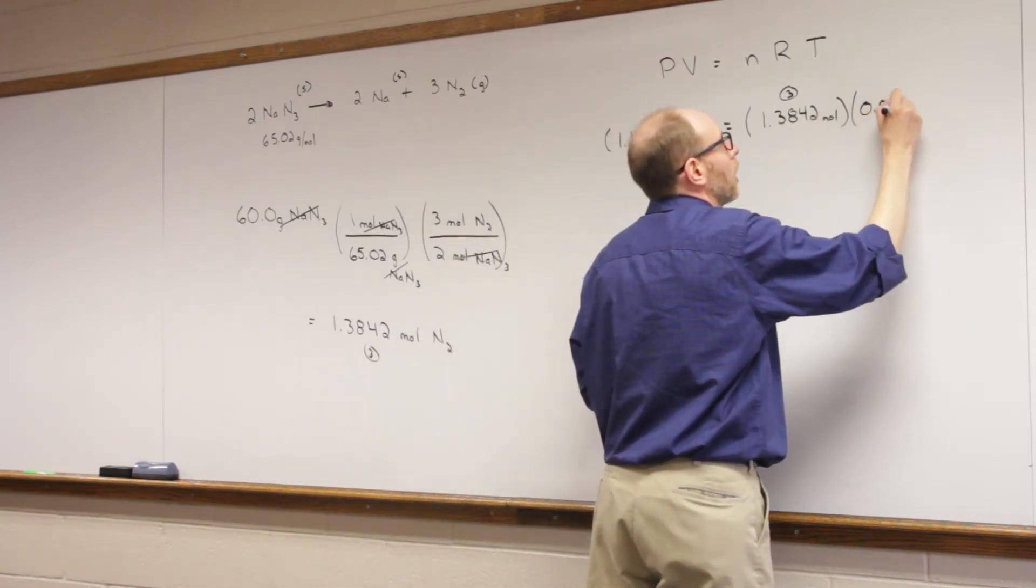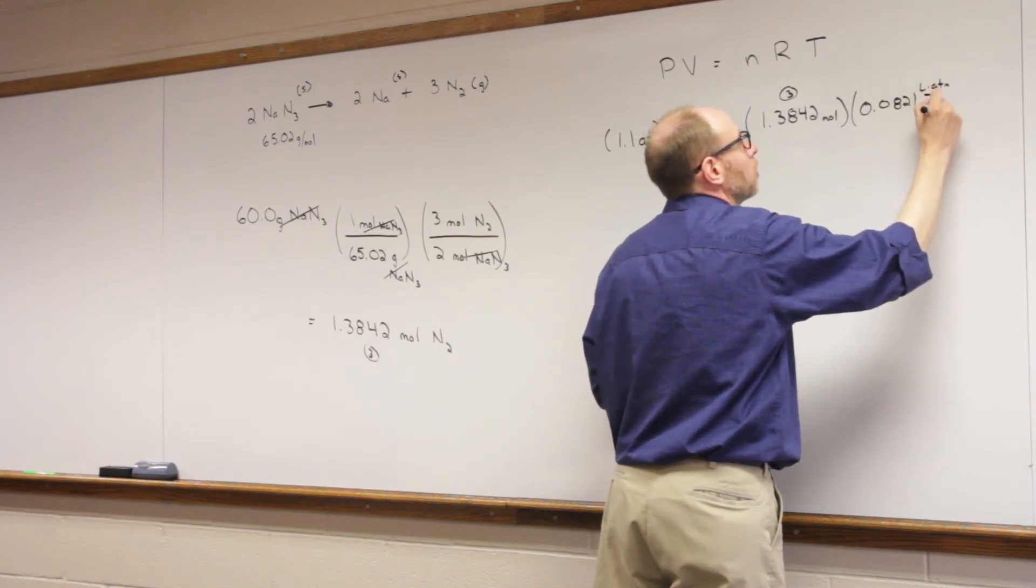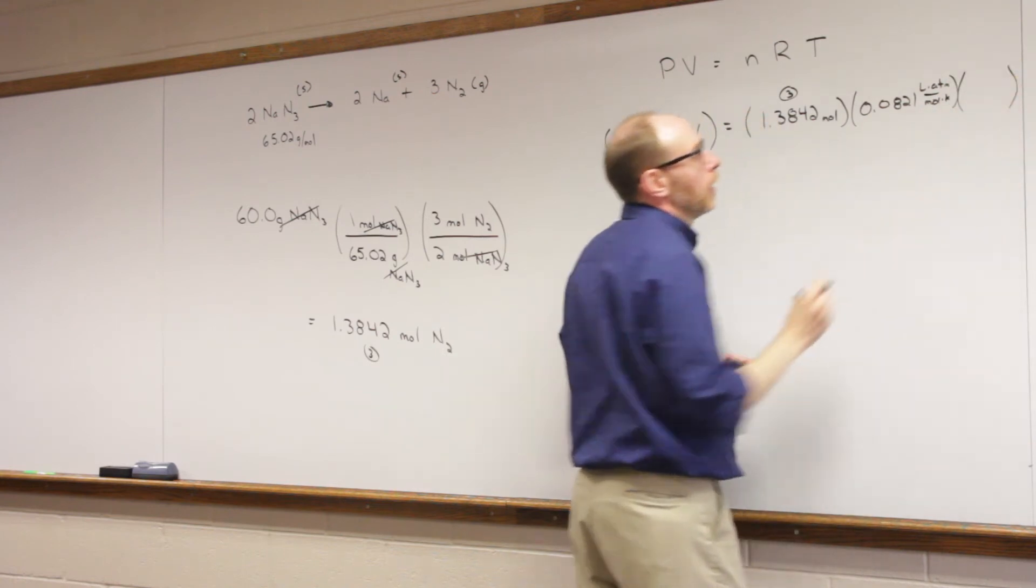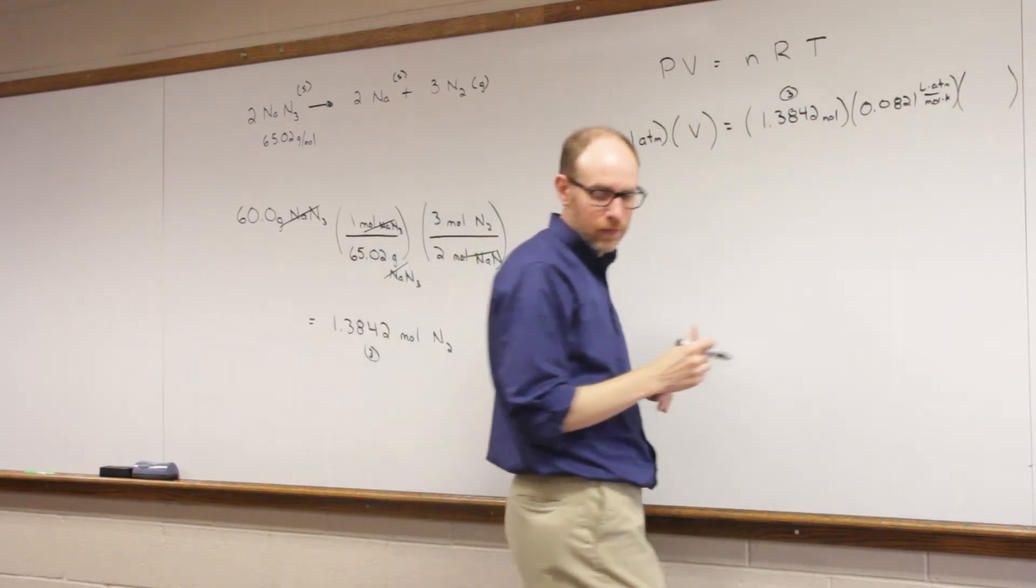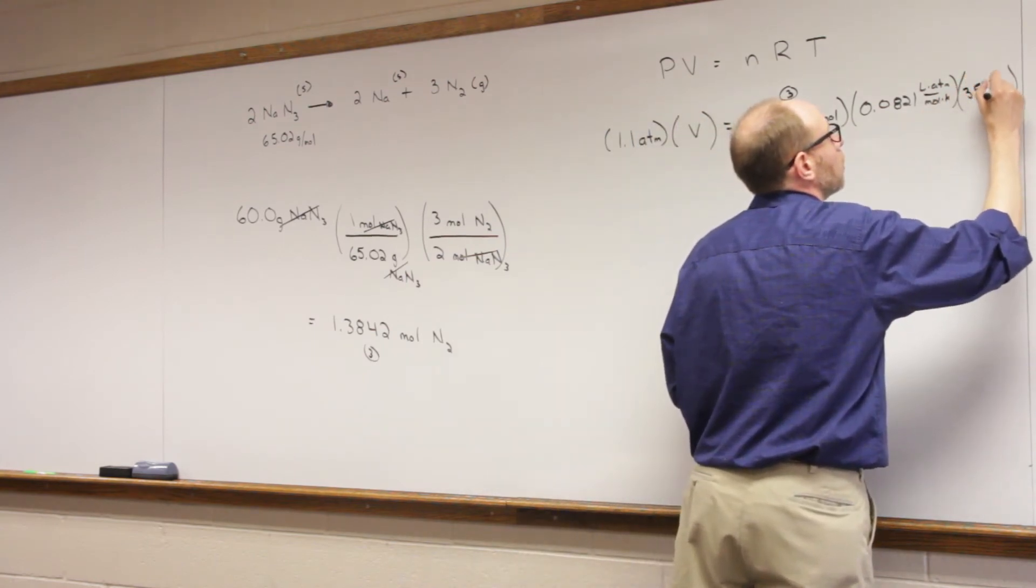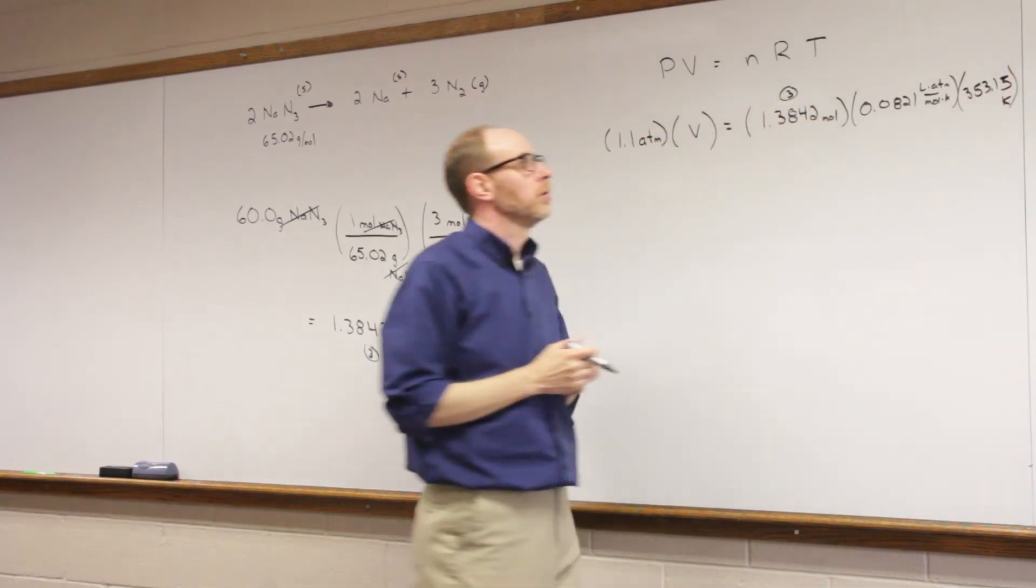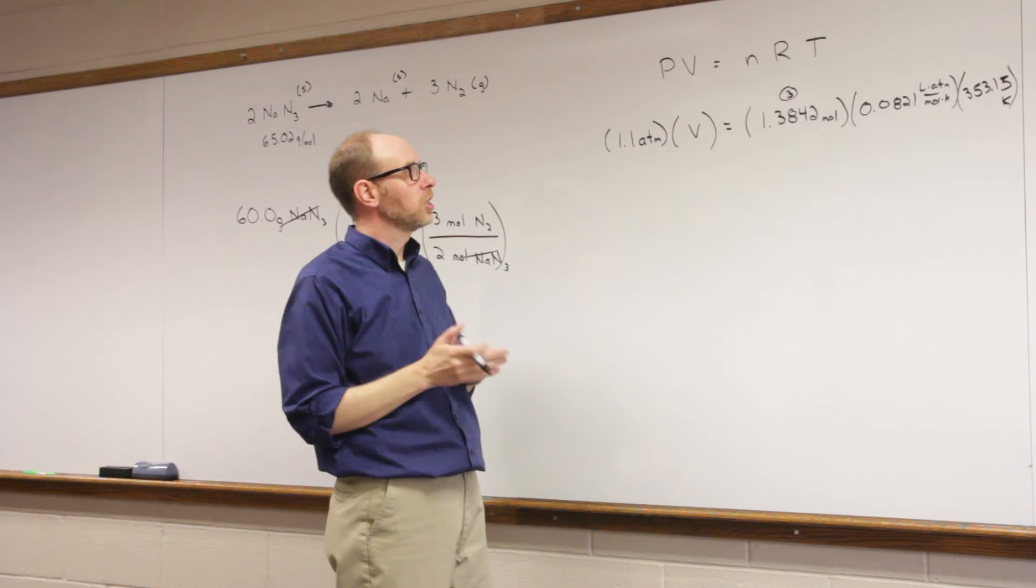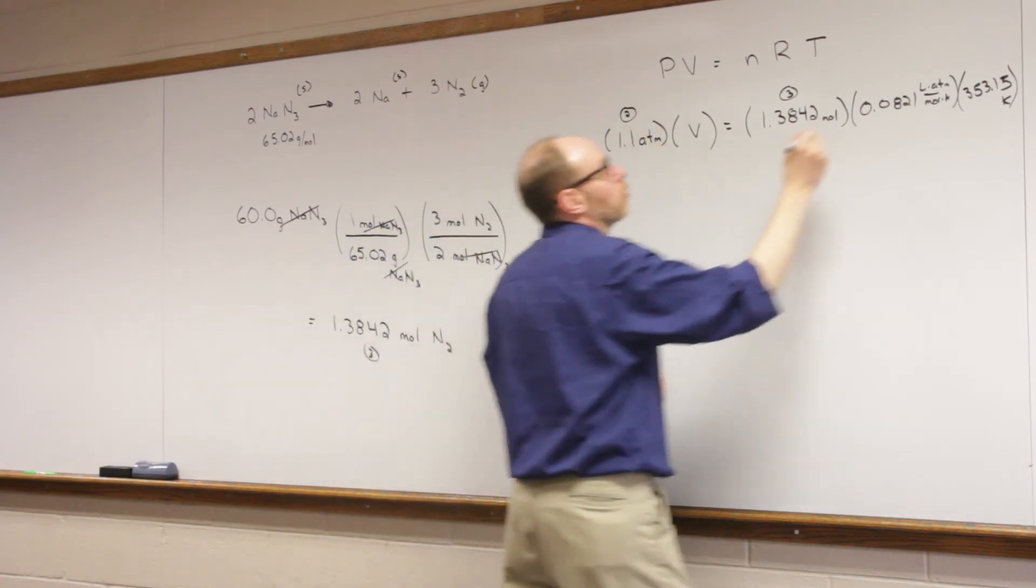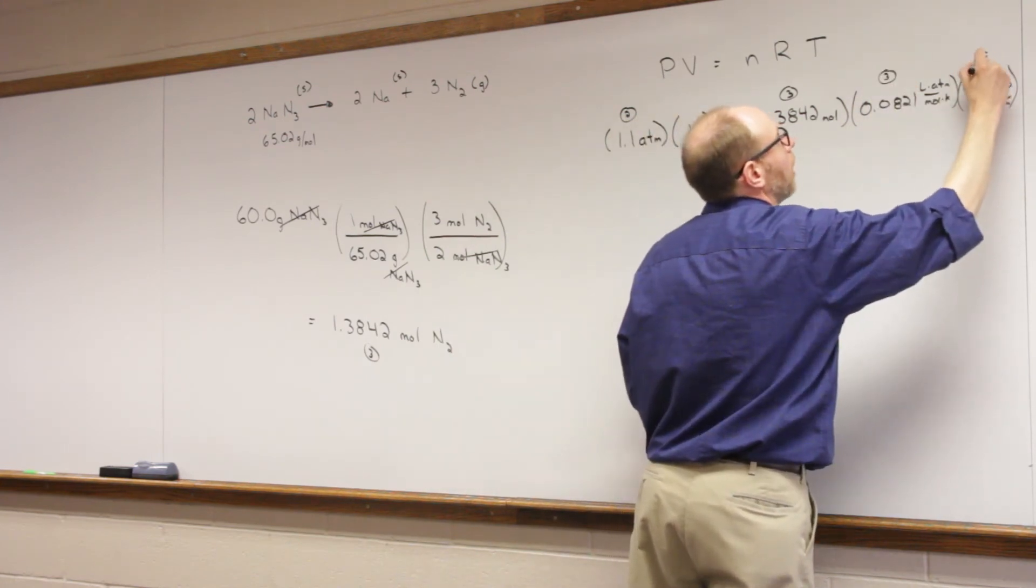R is 0.0821 liter atmosphere per mole kelvin. And our temperature in this case is 353.15 kelvin. Very much just a plug-and-chug style problem. We've got two significant figures here, and we've got three to our gas constant, and we've got five to our temperature.